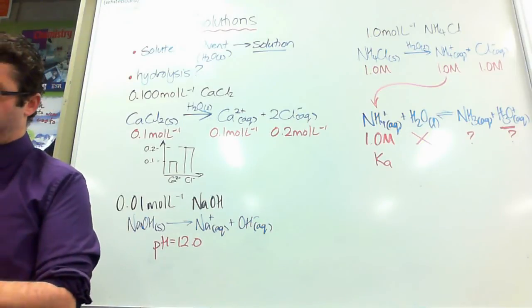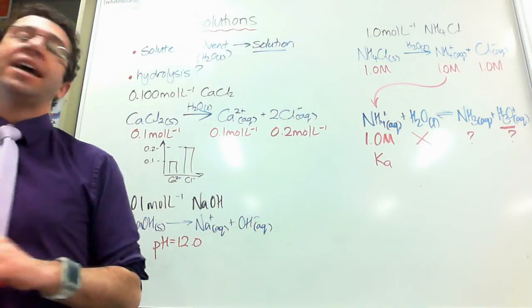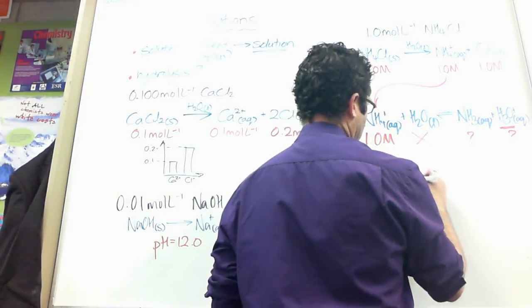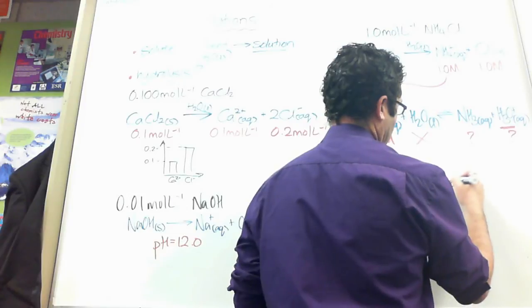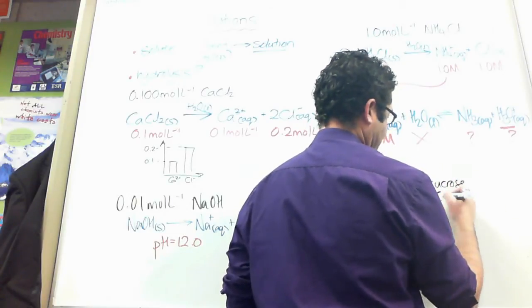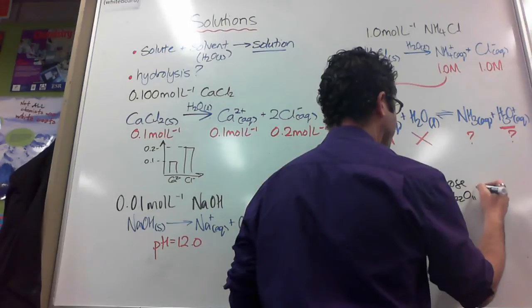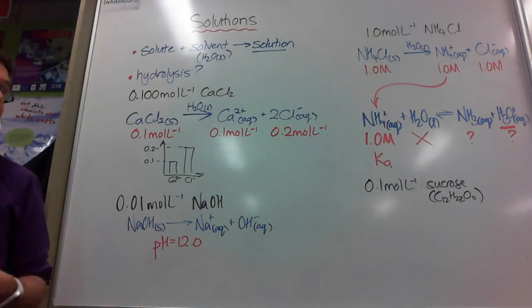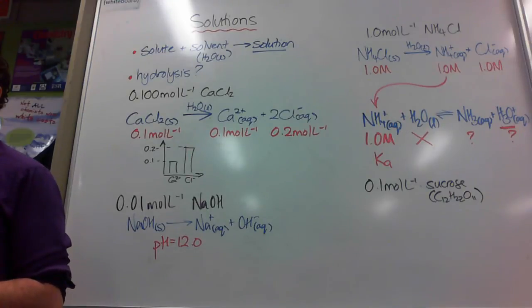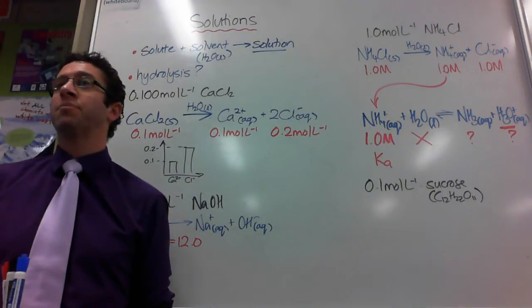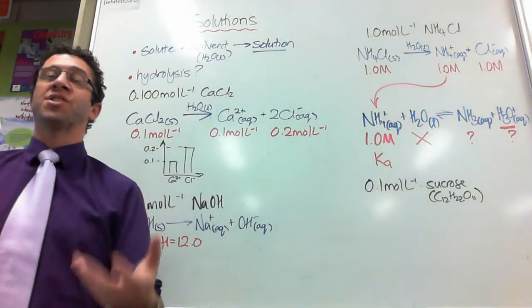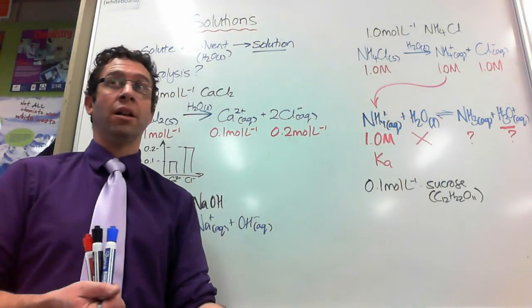The last one I want to talk about is one that throws people all the time. If I had something like 0.1 moles per litre of sucrose, which I'm going to quickly try to remember is C12H22O11. What's happening with that one? Well actually, this one seems really hard, but sucrose is a molecule and it has neither acidic nor alkaline properties. This is a bit like ethanol or anything like that we did in organic chemistry, which is neither acidic nor alkaline. It's neutral.